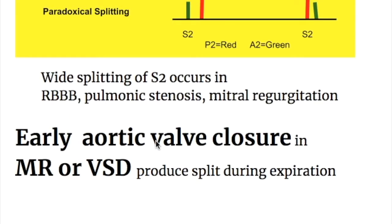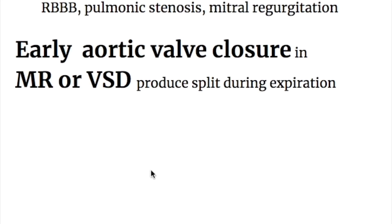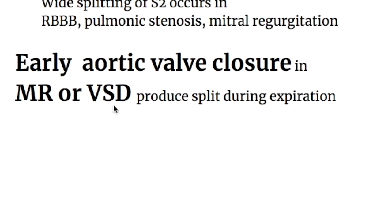Wide splitting of the second heart sound occurs in right bundle branch block, pulmonary stenosis, and mitral regurgitation. Early aortic valve closure in mitral regurgitation or ventricular septal defect can also produce splitting during expiration.